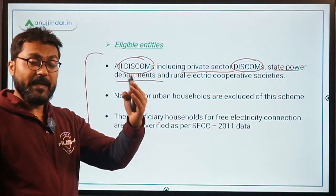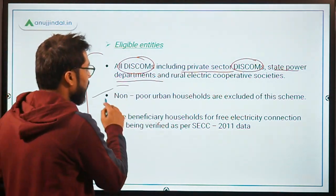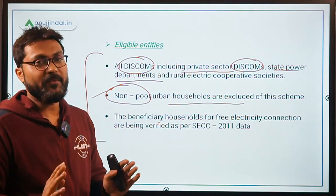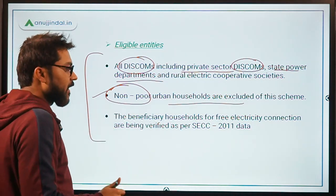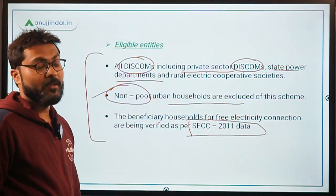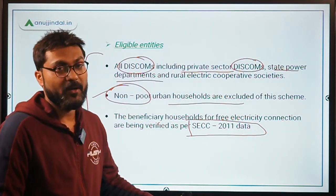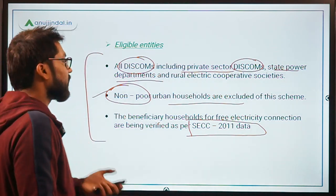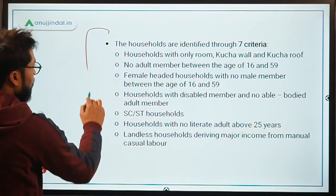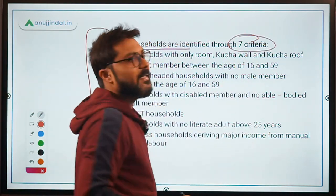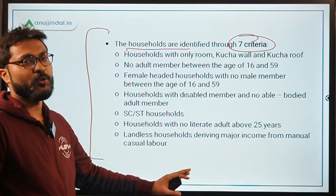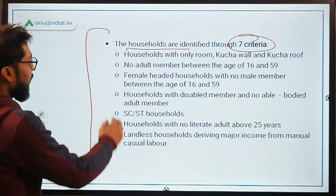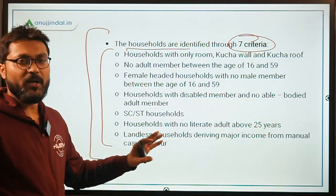Before moving to the eligibility of households, remember that non-poor urban households are excluded from this scheme. The eligible beneficiaries will be taken from the SECC — Socio-Economic and Caste Census 2011 data. Households are identified through seven criteria to be eligible to get free electricity under PM Saubhagya.